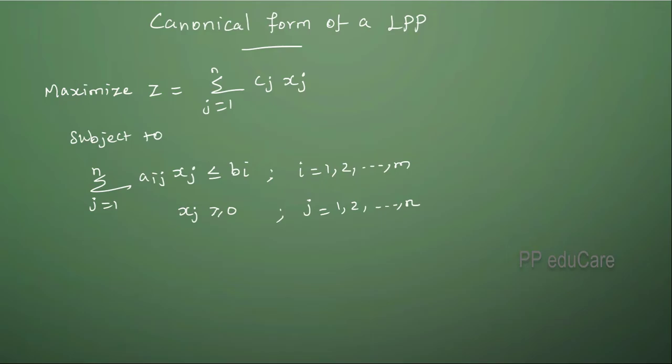One thing we must notice here is that in a canonical form the objective function should be of maximization type, and all the constraints should be of less than or equal to type, except the non-negativity constraints.